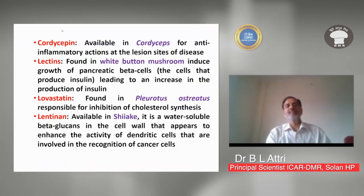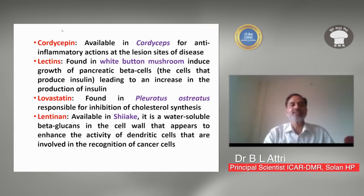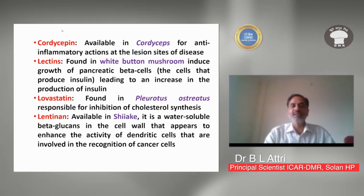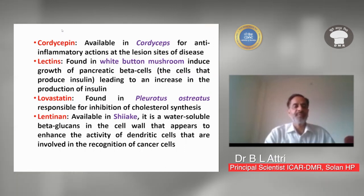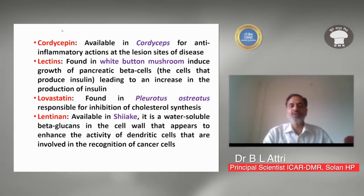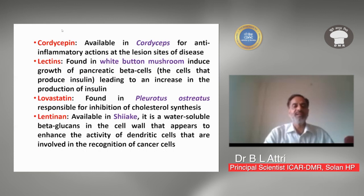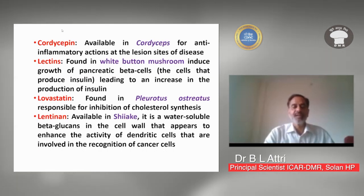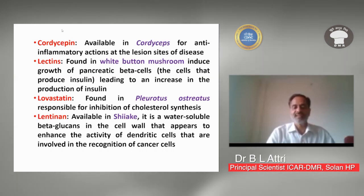Cordycepin is available in Cordyceps and has anti-inflammatory actions, working at the lesion sites of diseases. Lectins, found in white button mushroom, induce growth of pancreatic beta cells, leading to increased production of insulin. Globastatin, found in Ganoderma mushroom, is responsible for inhibiting cholesterol synthesis. Lentinan, available in shiitake, is a water-soluble beta-glucan in the cell wall that appears to enhance the activity of dendritic cells involved in the recognition of cancerous cells — meaning shiitake consumption may help prevent cancer cell production.